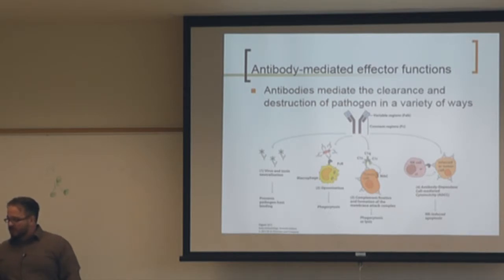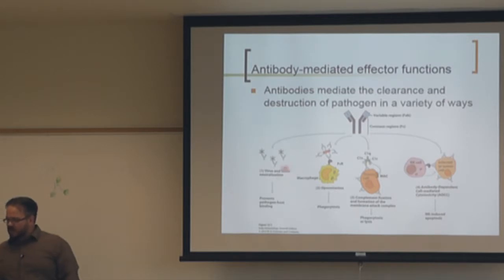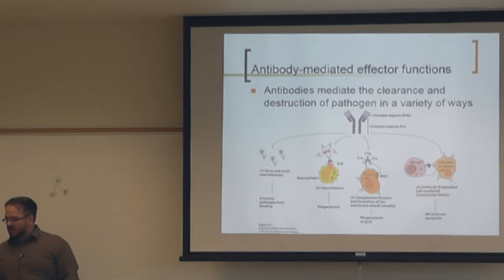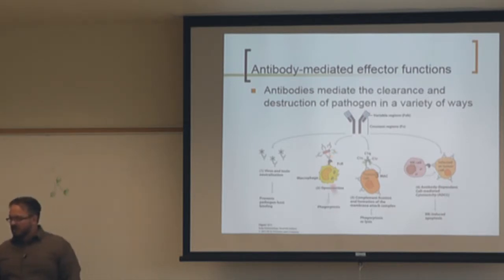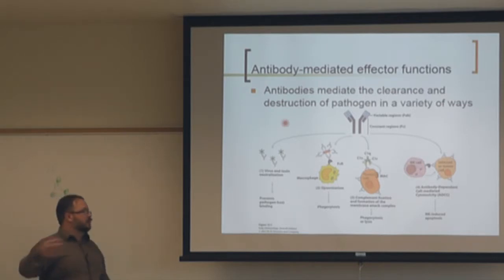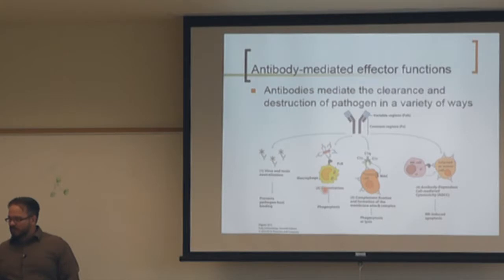Antibodies mediate clearance of pathogens in a variety of ways: neutralization, where the antibody binds viruses or toxins so they can't bind to the host; opsonization, where the FC receptor binds to the constant region of antibodies bound to a pathogen. When antibodies bind to something, the constant region changes conformation enough to bind FC receptors — free-floating antibodies won't bind FC receptors.